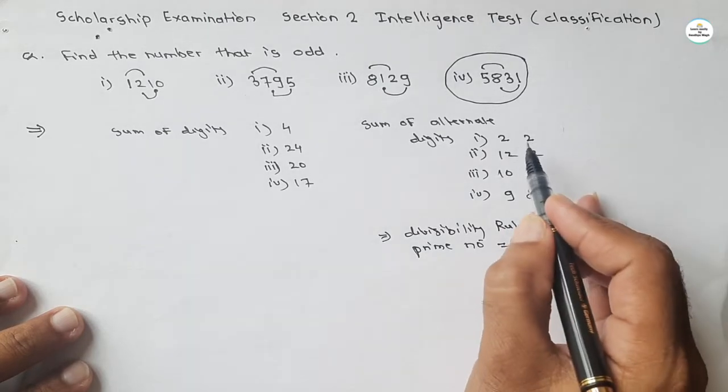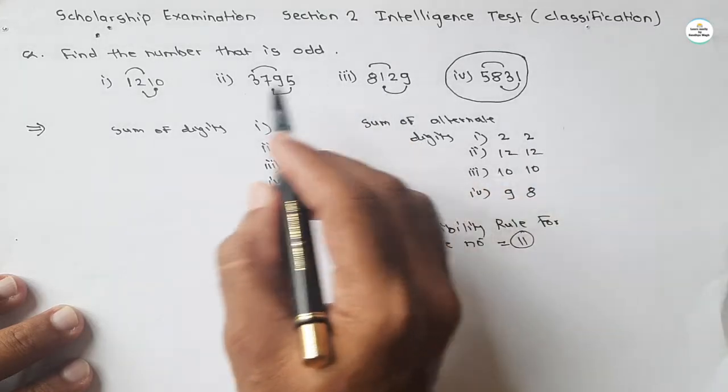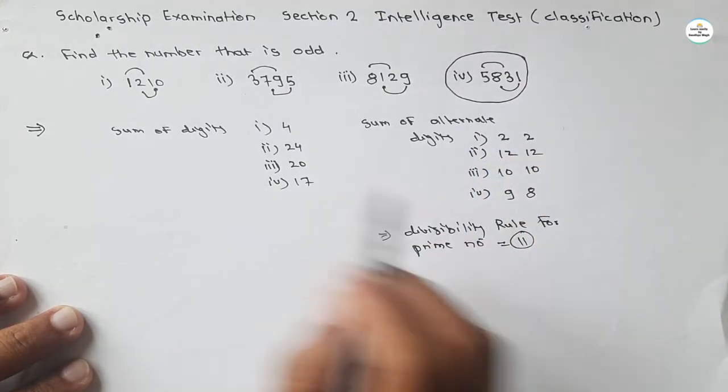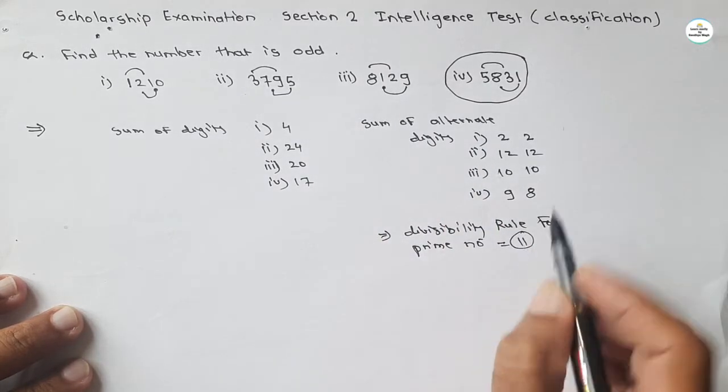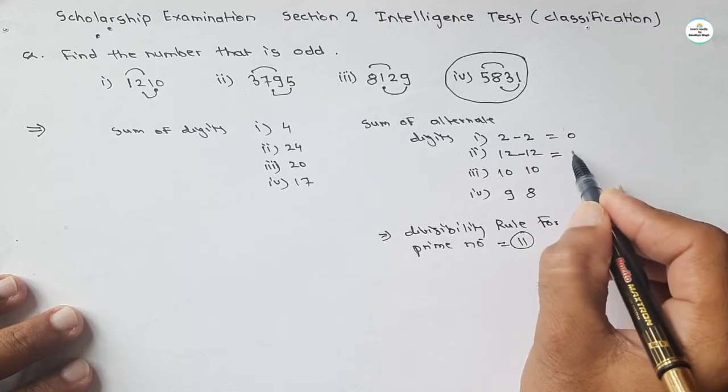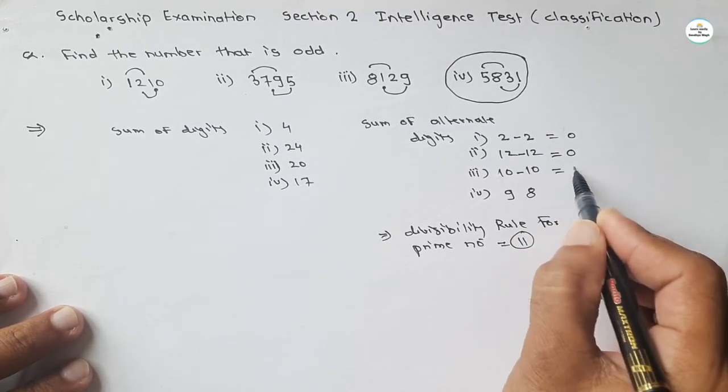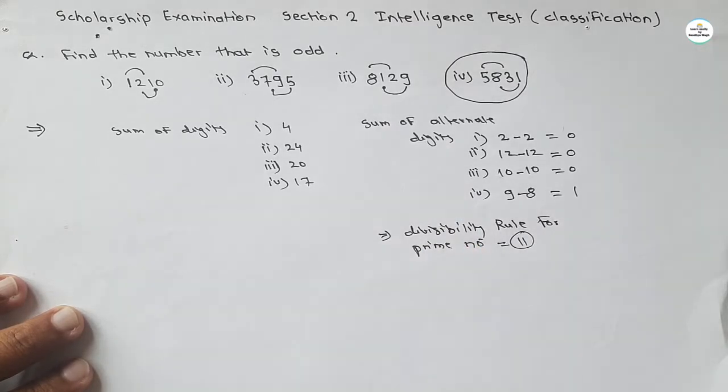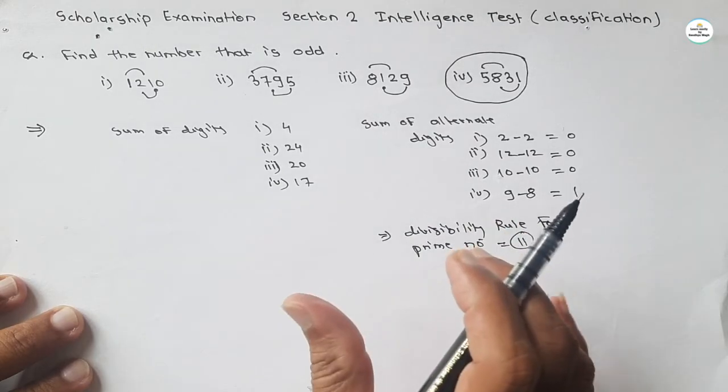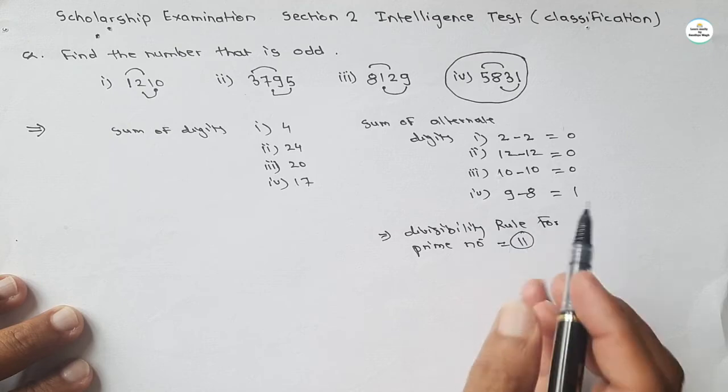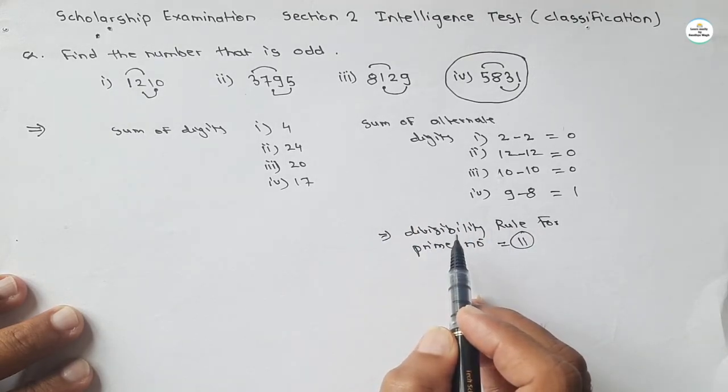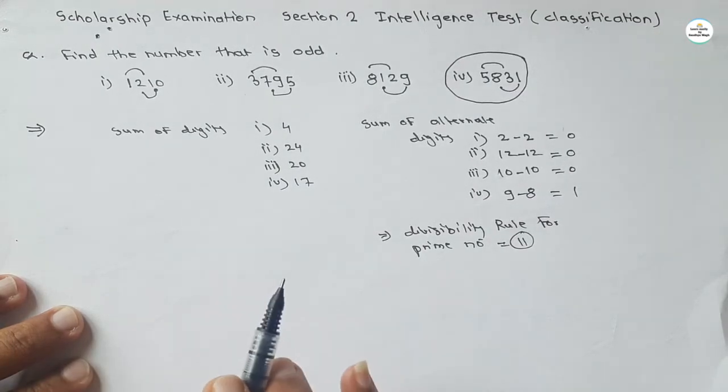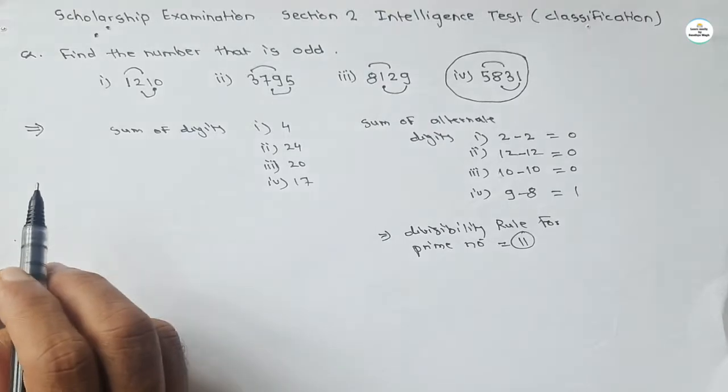This rule says if the difference of the sum of alternate digits is 0, either 0 or divisible by 11, then that number is divisible by 11. Here first three numbers are divisible by 11 because difference is 0. So thus we can find the odd number by trial and error, and these are some basic things that we must understand like divisibility rule for prime numbers, divisibility rule for basic numbers like 2, 3, 4, 5, 6, 8, 9, 10, 11, etc. This helps to find our answer very quickly.